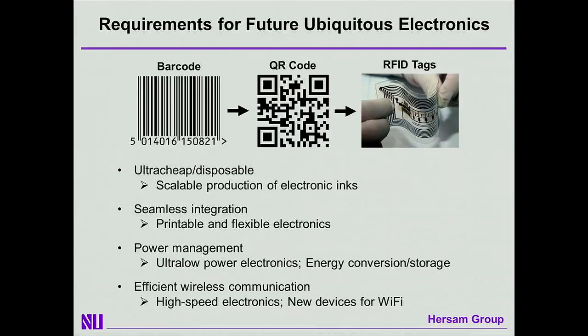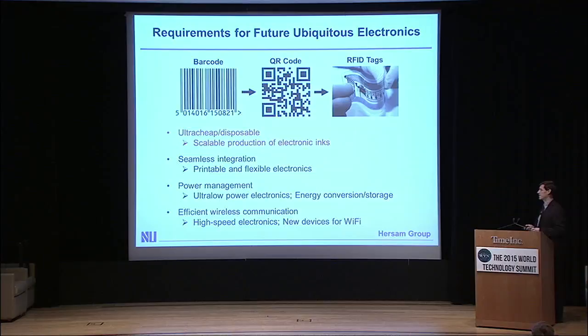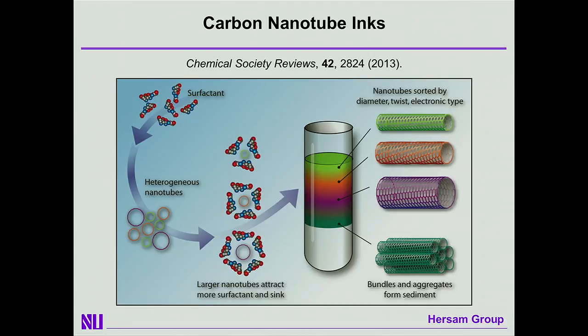To achieve this requires many things. The first is to realize ultra-cheap and disposable electronics — electronics that can be deposited onto substrates such as paper while still having active electronic functionality. This requires us to develop scalable production of functional electronic inks. Our lab utilizes carbon nanotubes for this purpose. Carbon nanotubes, when they're grown, are highly inhomogeneous. What you need to do first is disperse them, and we disperse them in water using simple soap molecules — surfactants — and then run them through a centrifugation process that allows us to tease out each subpopulation of nanotubes in the raw material.